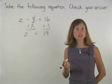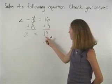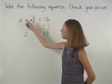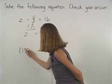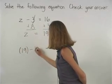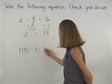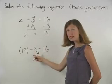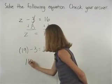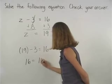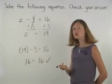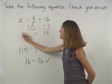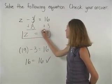Remember that we can check our answer by substituting 19 back into the original equation. So we have 19 minus 3 equals 16. 19 minus 3 is 16, so we have 16 equals 16, which is a true statement. So our answer, z equals 19, is correct.